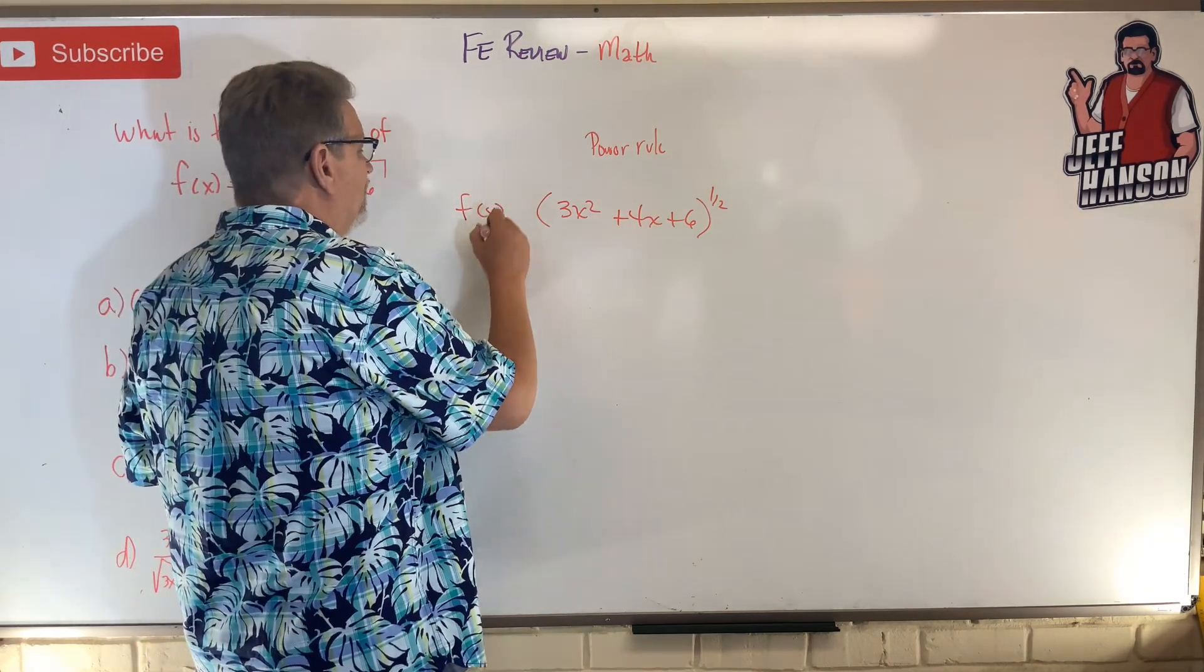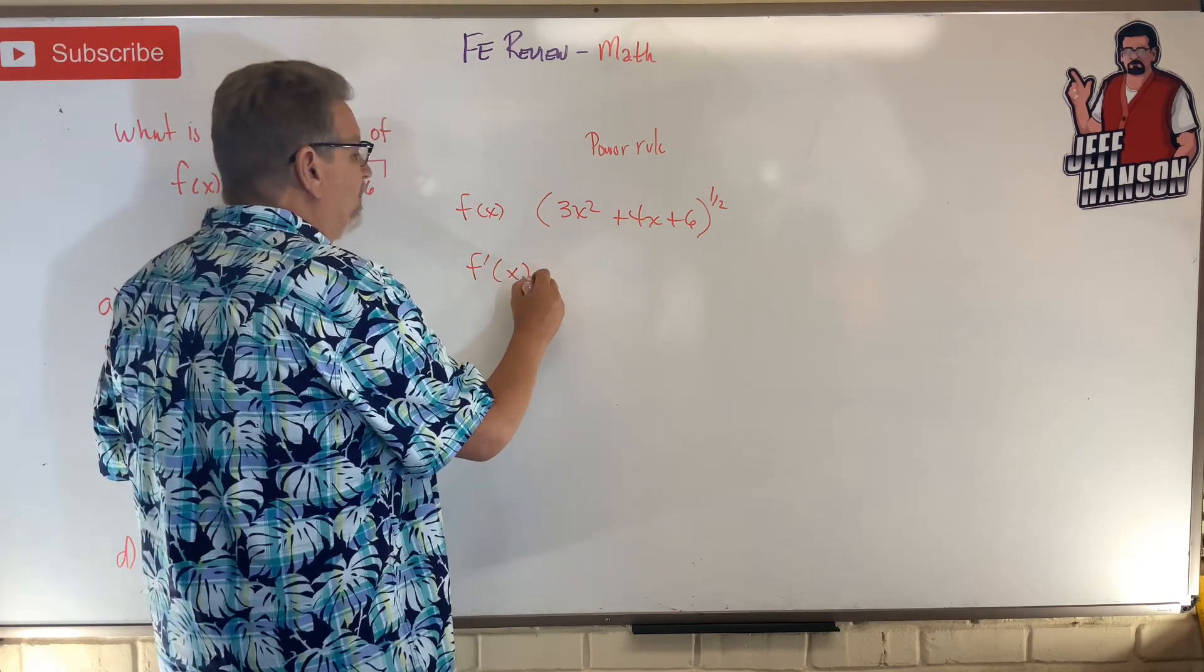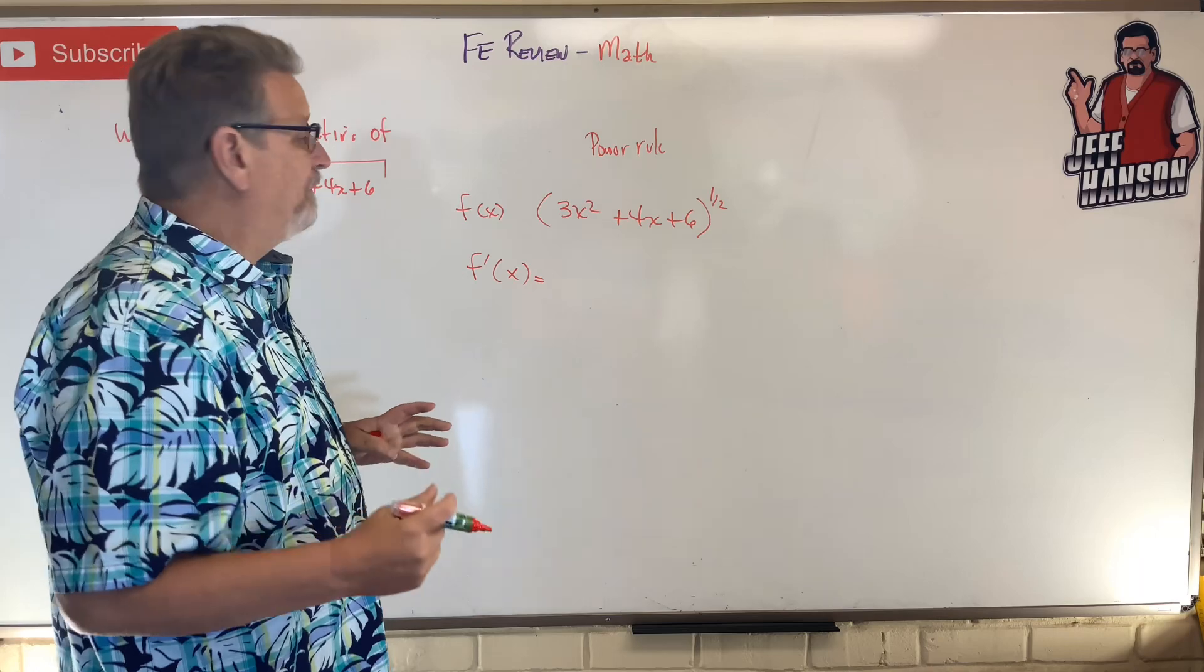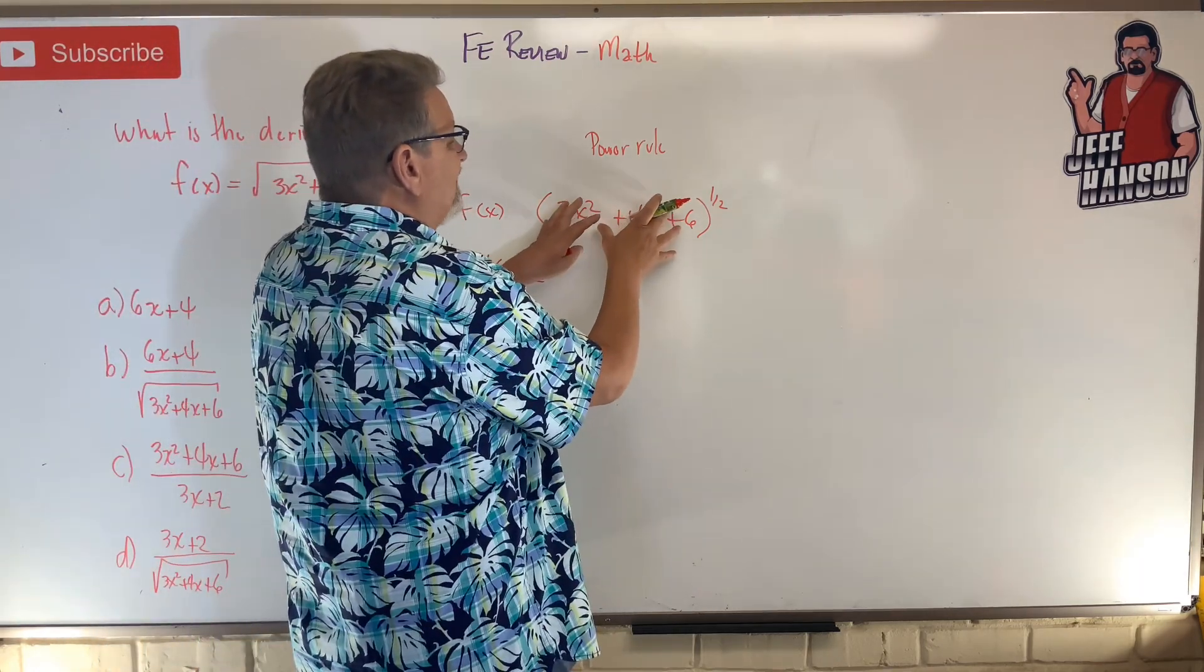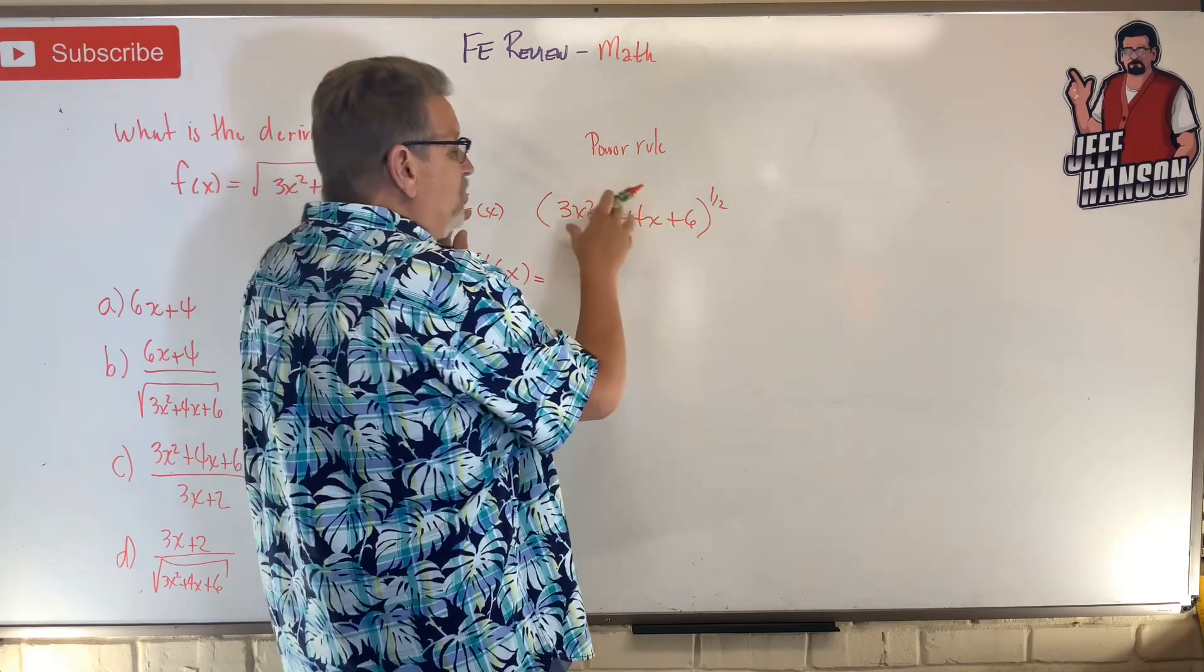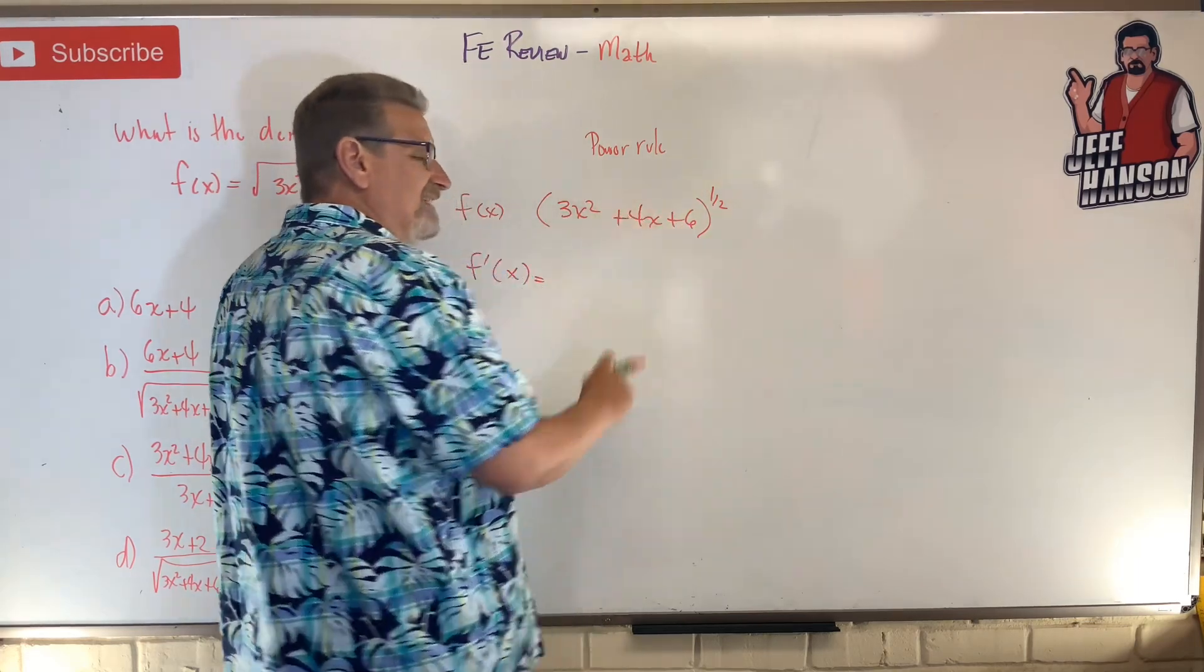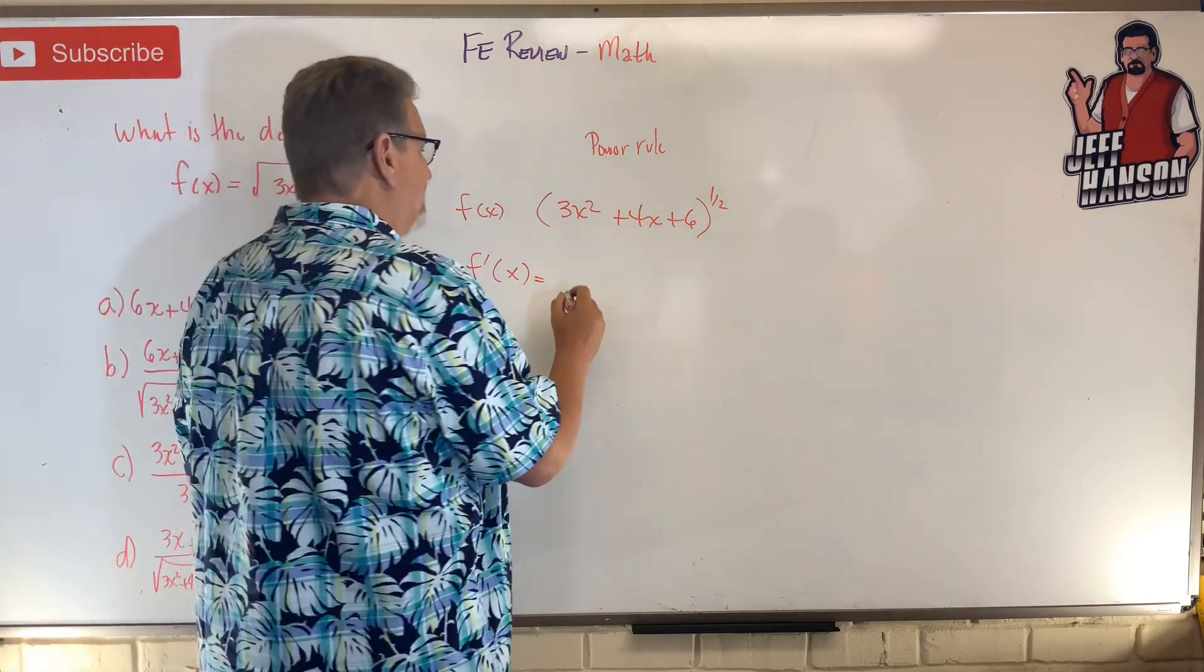Now when you take the derivative of this, this is f(x), so when you take the derivative, f'(x), if you remember how to do this for a power rule, you take the derivative of x and then you multiply it by the derivative of what's inside the parentheses.